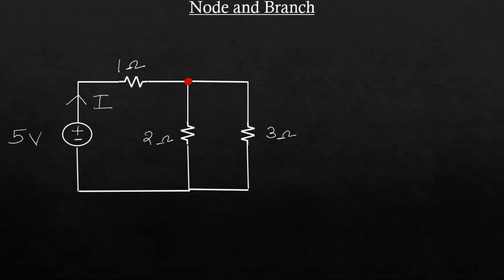That is, if you see this point. At this point we have three elements: 1, 2, and 3. That will be known as a node.